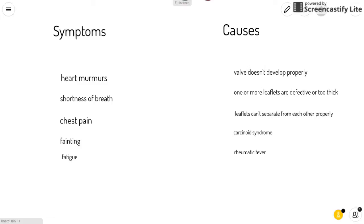Some causes of pulmonary stenosis include if the valve doesn't grow properly during fetal development, or if one or more of the three leaflets are defective or too thick, or if the leaflets can't separate from each other properly.